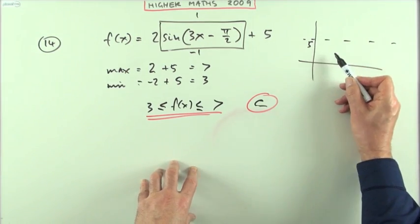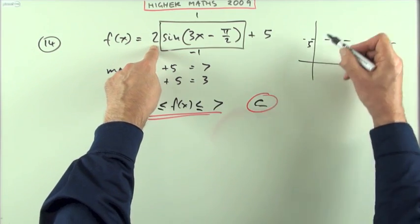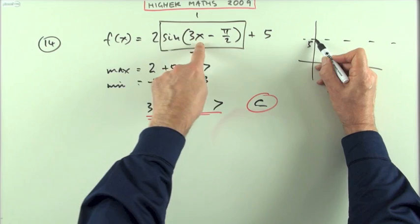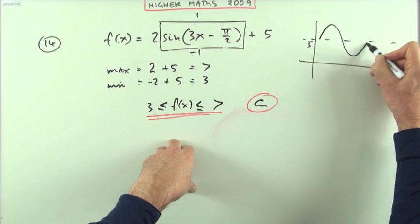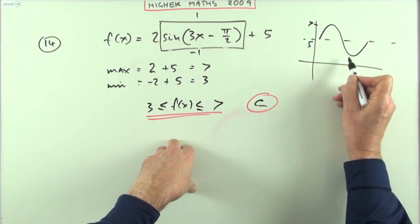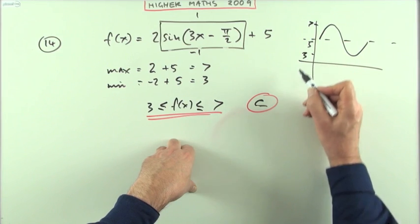And about that line, instead of just going up and down one, it's going to go up and down two. It's not going to start at the correct place because it's got a displacement over somewhere else, but it's going to go up two to seven, down two to three.